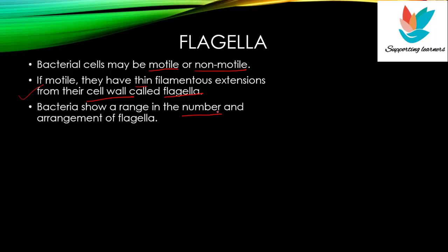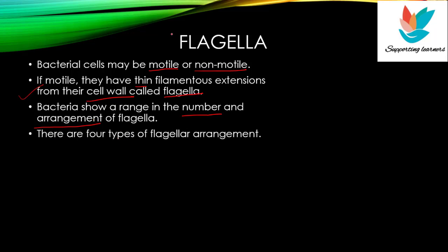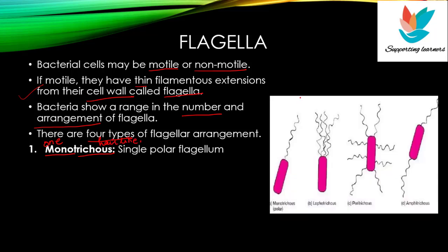The number of flagella can vary in bacteria. Some bacteria have one flagella, some two, and some have multiple flagella. The flagella arrangement also can be different, and there are 4 types. The first type is monotrichous arrangement. 'Mono' means one and 'trichous' means hair-like. In monotrichous arrangement, bacteria has a single flagella at one end — it is a polar flagellum. The flagellum is singular here.